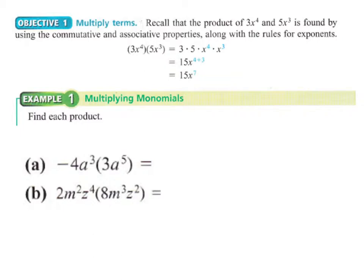Looking at our first example, negative 4a cubed times 3a to the fifth: multiplying the negative 4 and the 3 together gives us negative 12, and then for a cubed times a to the fifth, we add the exponents to get a to the eighth power. So the answer is just negative 12a to the eighth.